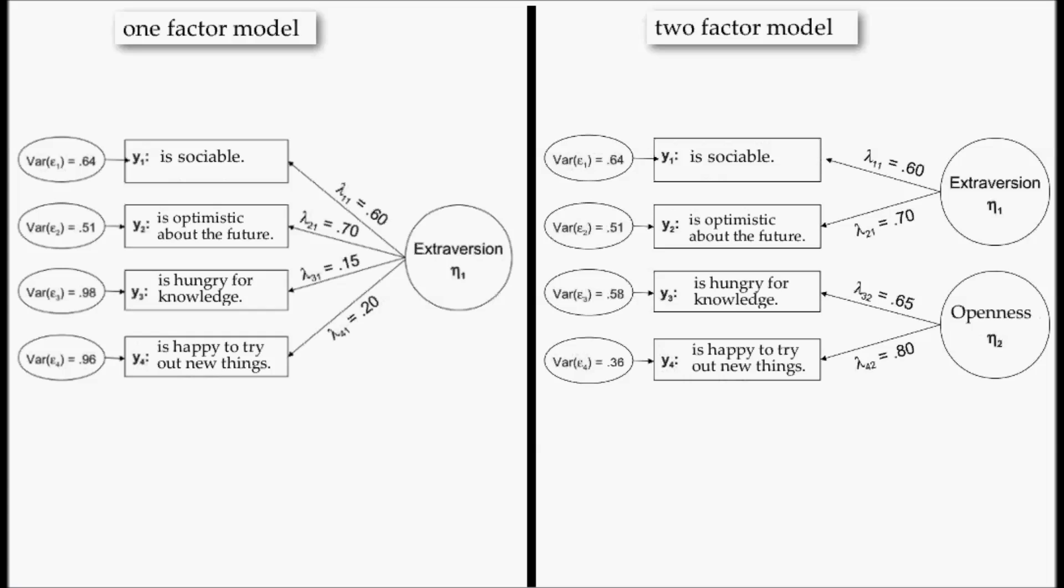By the way, what are the loadings? Well, the loadings are equivalent to the slopes in a regression analysis. And if you square the loadings, for example, the loading of item 1 on extraversion, if you square the loading, you get 0.36. And if you add this up to the error variance, you get 1. So again, all the variance of the observed variables can be explained by the latent factor and the error variance.